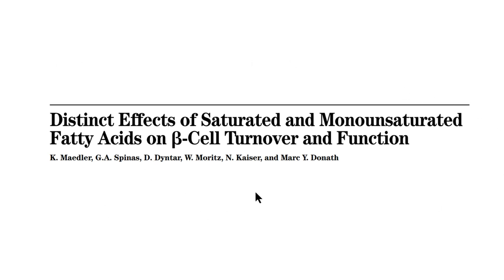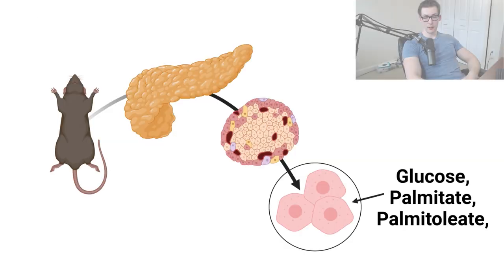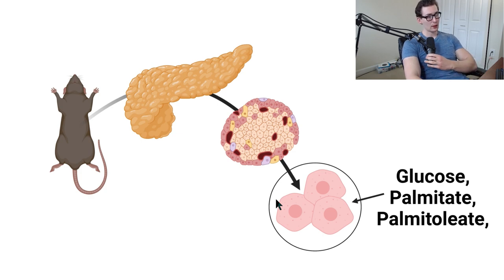All this information comes from a study in the journal Diabetes. It's a pretty old study from around 2000 or 2001 called 'Distinct Effects of Saturated and Monounsaturated Fatty Acids on Beta Cell Turnover and Function.' This is done in animals. I realize there's always a good amount of critique when it comes to animal studies, which is understandable. However, I did find one study that looked at humans, and I will be covering that in the future.